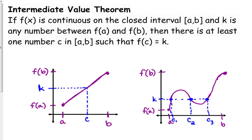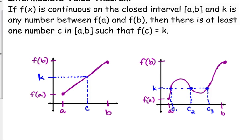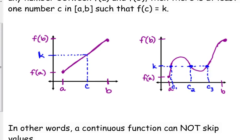But you are guaranteed that it equals that value at least once. Once or more on that interval if you have a continuous function. Very important that it must be a continuous function on that interval. So in simple terms, a continuous function cannot skip values.